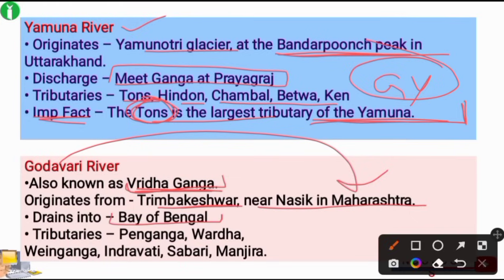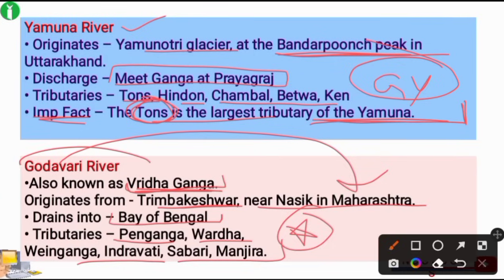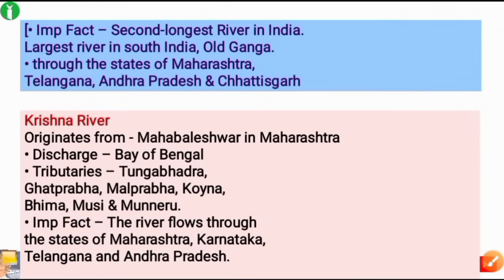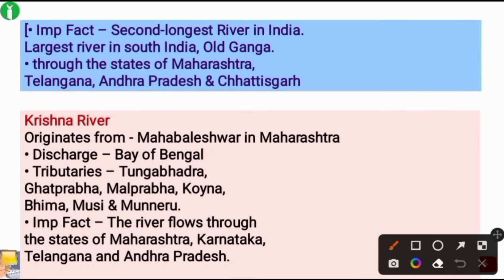The important tributaries of the Godavari River are Pranhita, Wardha, Wainganga, Indravati, Sabari, and Manjira. The Godavari is the longest river of South India and the second longest river in India. It is also known as the 'Ganga of South' or 'Old Ganga.' It flows through the states of Maharashtra, Telangana, Andhra Pradesh, and Chhattisgarh.